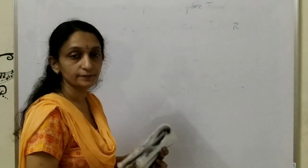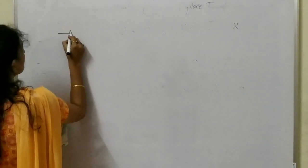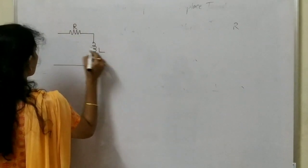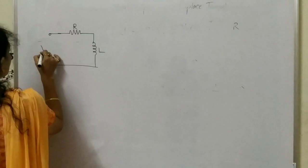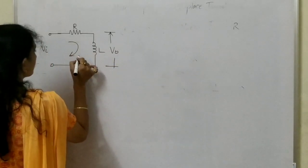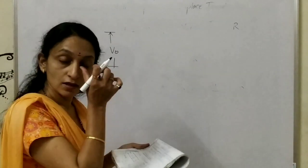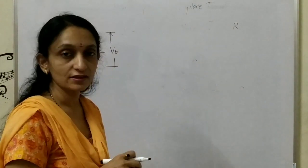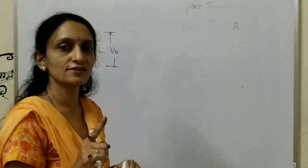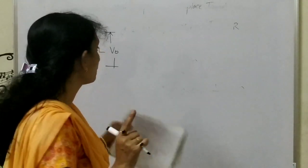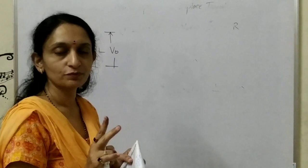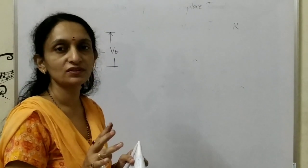Take the series circuit — RL circuit. This is an RL series circuit. Since it is a series circuit, the steps involved to find the transfer function are: number one, obtain the voltage or current equation depending on whether the circuit is series or parallel; number two, take the Laplace transform of that equation; number three, rearrange that equation to get the transfer function.